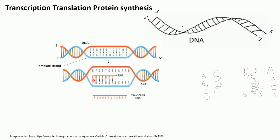Looking at the template strand: T pairs with A, and A pairs with uracil. Why uracil and not thymine? Because in the RNA molecule we have uracil in place of thymine — thymine is present in DNA. So C binds to G, T binds to A, and A binds to U.